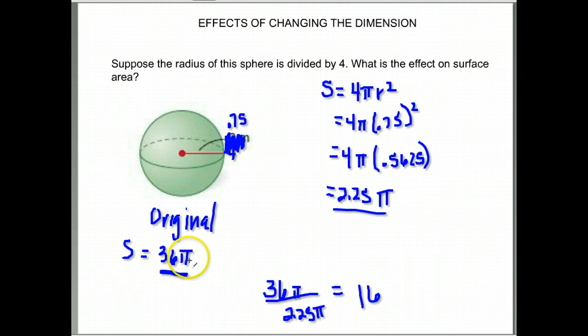So the original is 16 times the new, or the new one is the original divided, because it made it smaller, by 16.